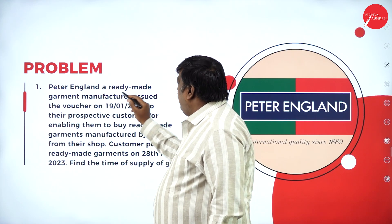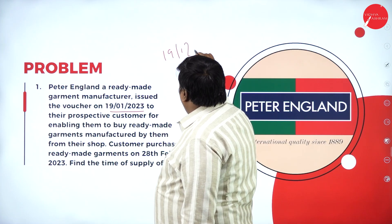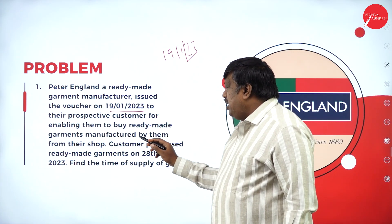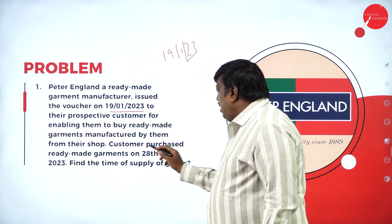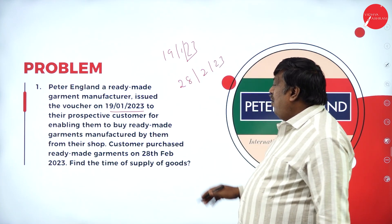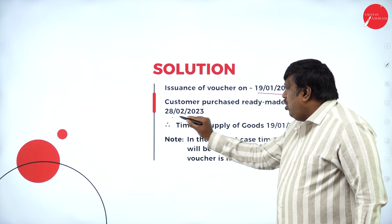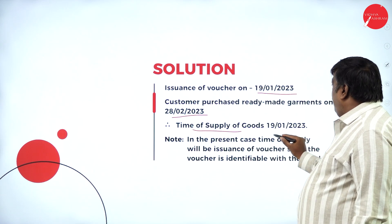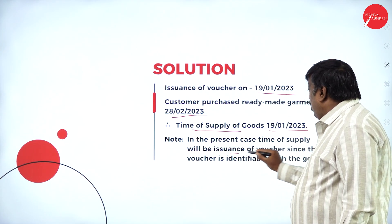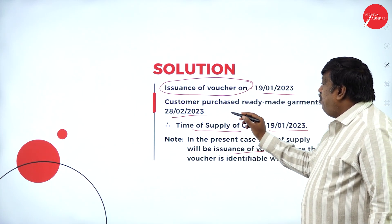Problem: Peter England, a ready-made garment manufacturer, issued a voucher on 19th January 2023 to a prospective customer for enabling them to buy ready-made garments manufactured by them from their shop. The customer purchased ready-made garments on 28th February 2023. Find the time of supply of goods. Issuance of voucher is 19th January; customer purchased on 28th February. The time of supply of goods will be 19th January — the date of issuance of the voucher — and not the purchase date.